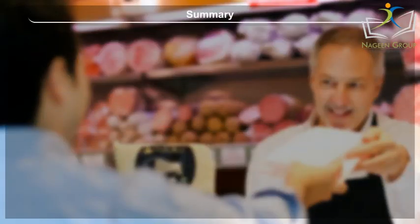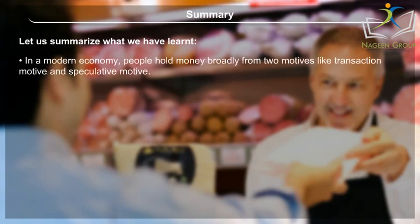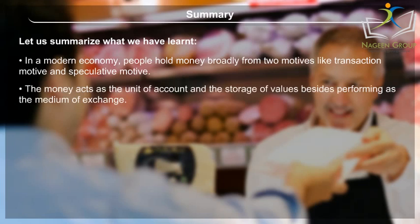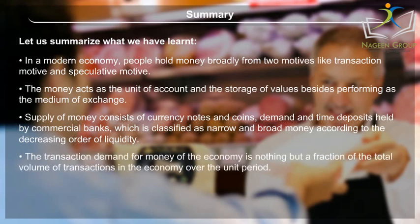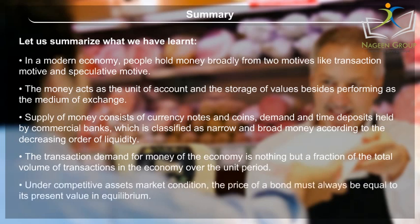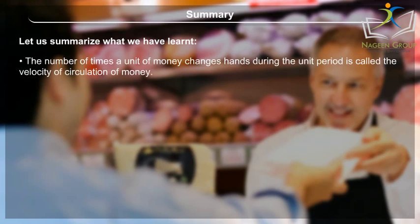Summary. In a modern economy, people hold money broadly from two motives: transaction motive and speculative motive. Money acts as the unit of account and the storage of value, besides performing as the medium of exchange. Supply of money consists of currency notes and coins, and demand and time deposits held by commercial banks, classified as narrow and broad money according to decreasing order of liquidity. The transaction demand for money is nothing but a fraction of the total volume of transactions in the economy over the unit period. Under competitive asset market conditions, the price of a bond must always equal its present value in equilibrium.